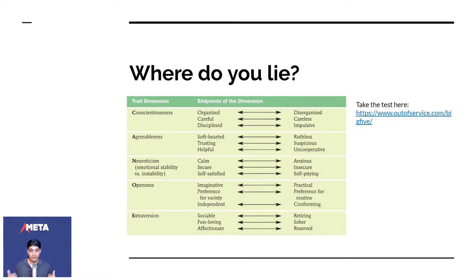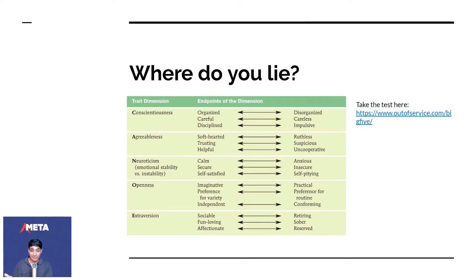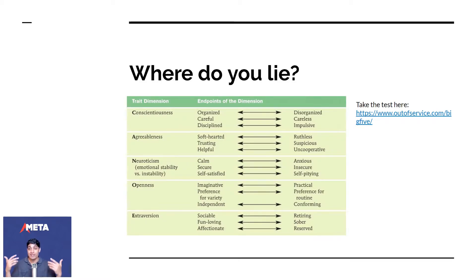Agreeableness: you are either soft-hearted, trusting, and helpful, or you could be ruthless, suspicious, and uncooperative. The theory says that the less agreeable you are, the more you get ahead in life — meaning you're just not a pushover. Being soft-hearted, trusting, and helpful can also mean you become gullible. Too much on that side and you say yes to everything, and saying yes to everything gets you nowhere. Most successful people say no to everything — they're on the other side, less agreeable. Agreeableness is about how often you say yes and how often you say no.